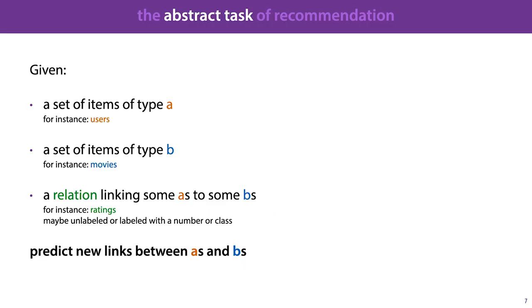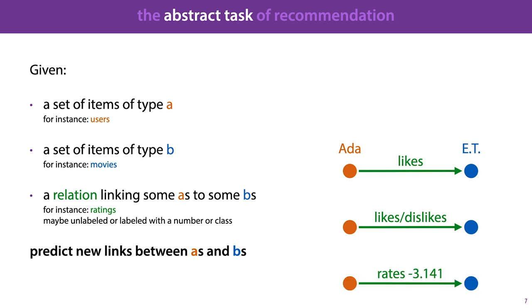So this is the abstract task of recommendation. We are given two sets, one of items of type A and one of items of type B, and a relation linking some of the A's to some of the B's. And our task is to predict new links between the A's and B's. The links may be unlabeled, in which case they simply hold or they don't hold. They may be labeled with a class, for instance in the case of like and dislike ratings, or they may come with a numeric value. In the labeled cases, the class or the number always expresses the extent to which the link holds.